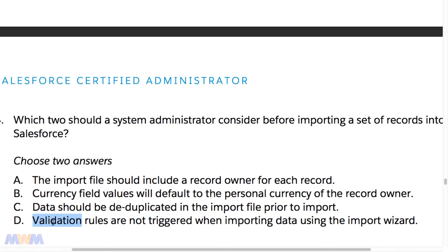not triggered when importing data using the import wizard. This question is dealing with importing a set of records and asking what you should consider before doing so. It's helpful to know what is blatantly incorrect at the onset. The first thing to keep in mind is that validation rules are respected during the import process, either through the import wizard or through the data loader. So D cannot be correct, because during mass imports, validation rules do indeed trigger and block records from going in.